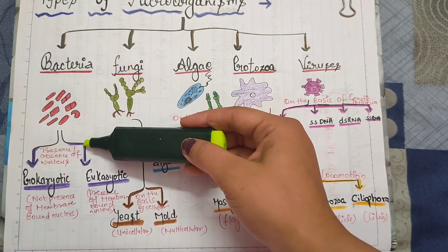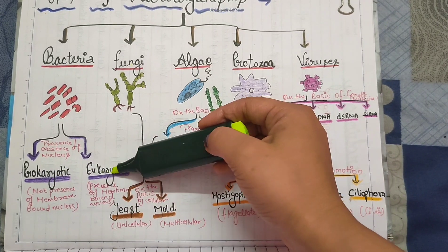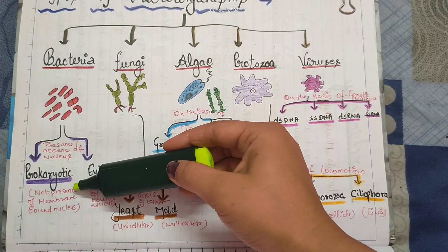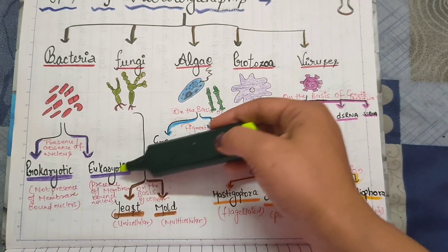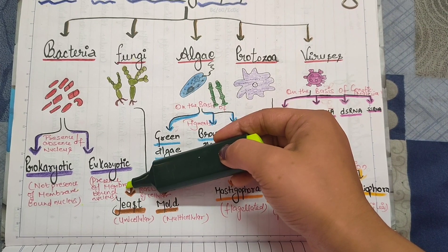Bacteria are further classified on the basis of presence or absence of nucleus into prokaryotic and eukaryotic organisms. In prokaryotic organisms, there is no presence of membrane-bound nucleus. In eukaryotic organisms, there is presence of a membrane-bound nucleus.